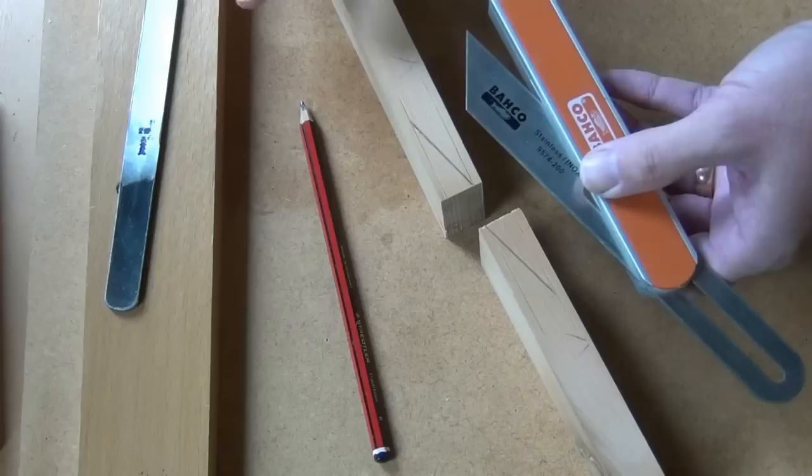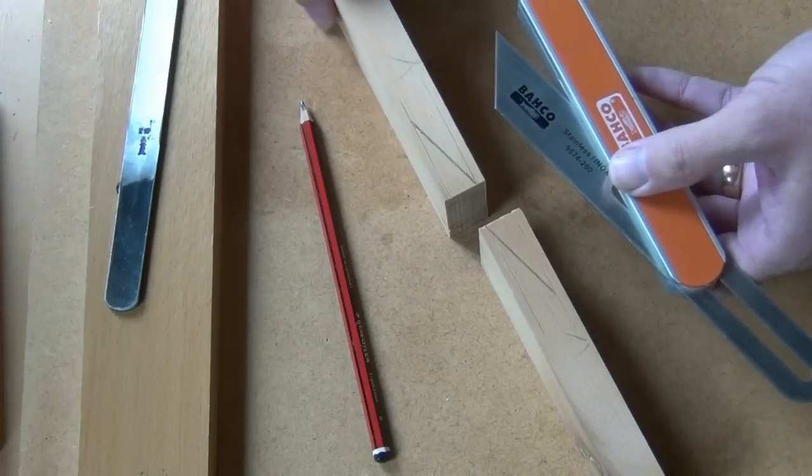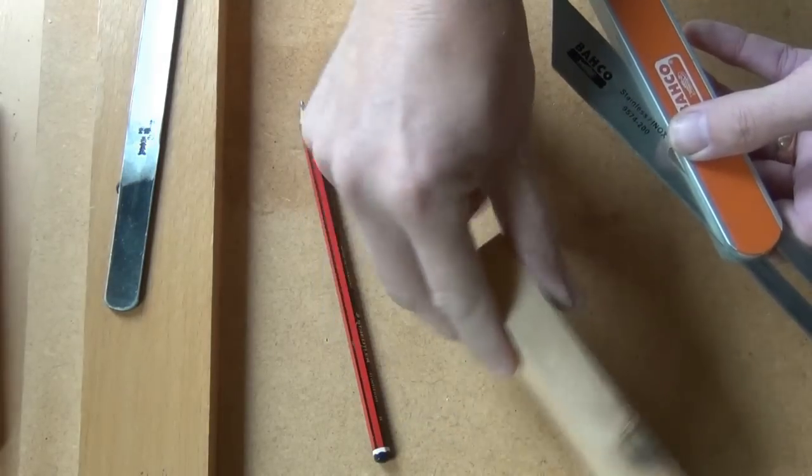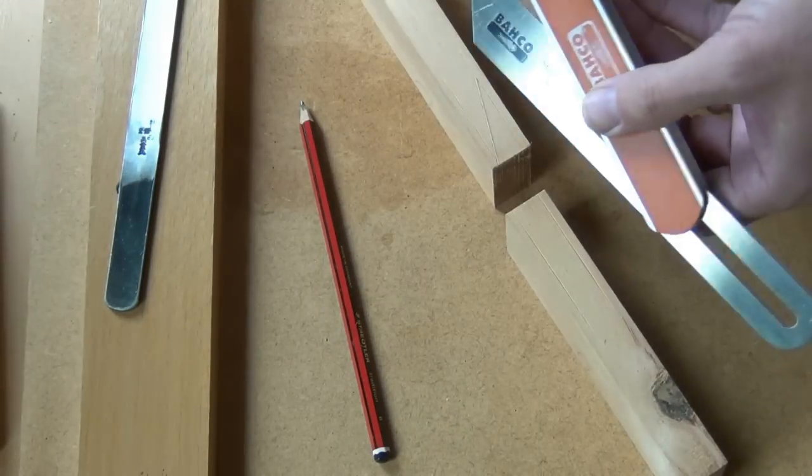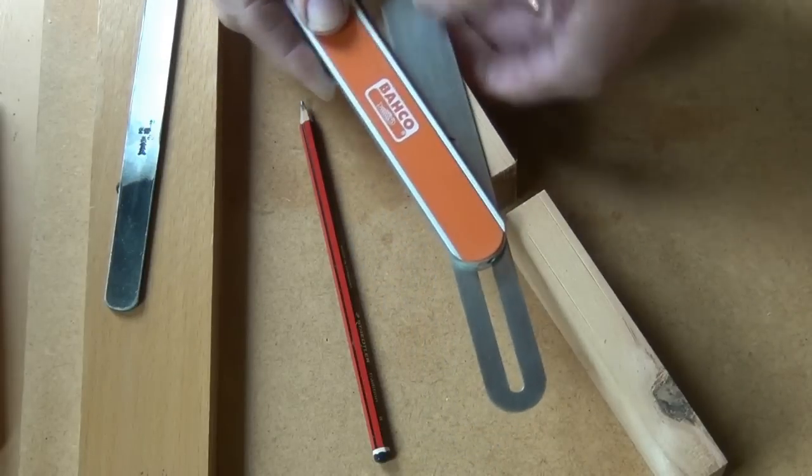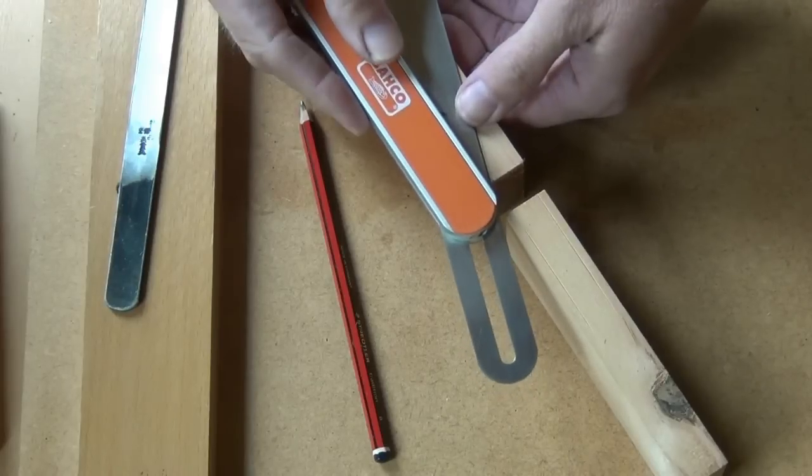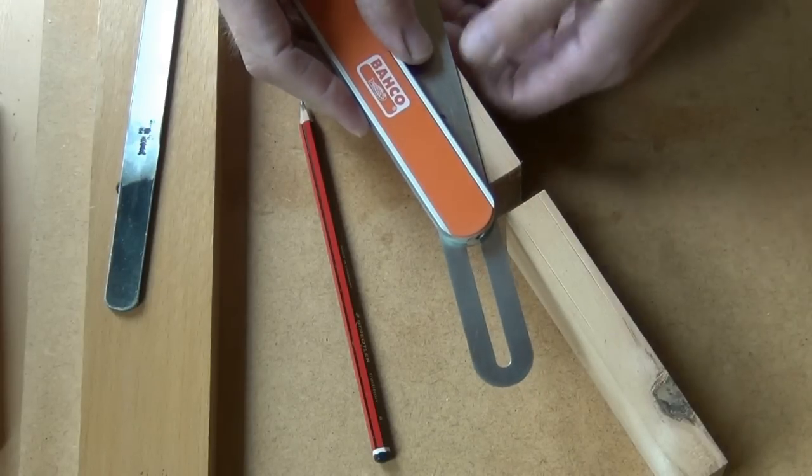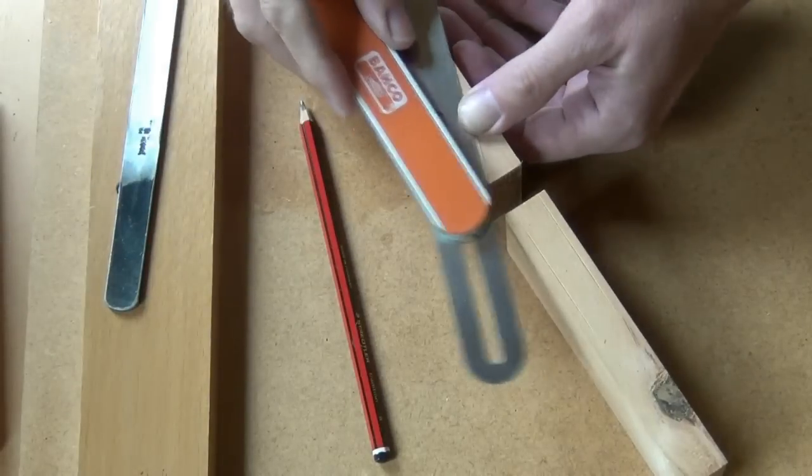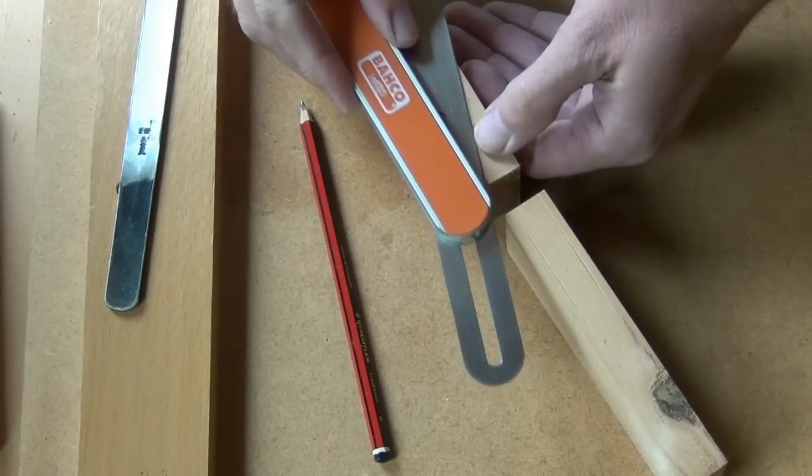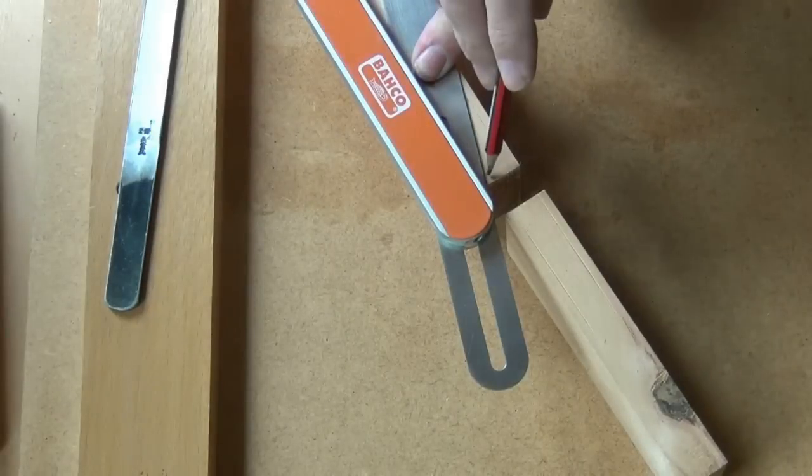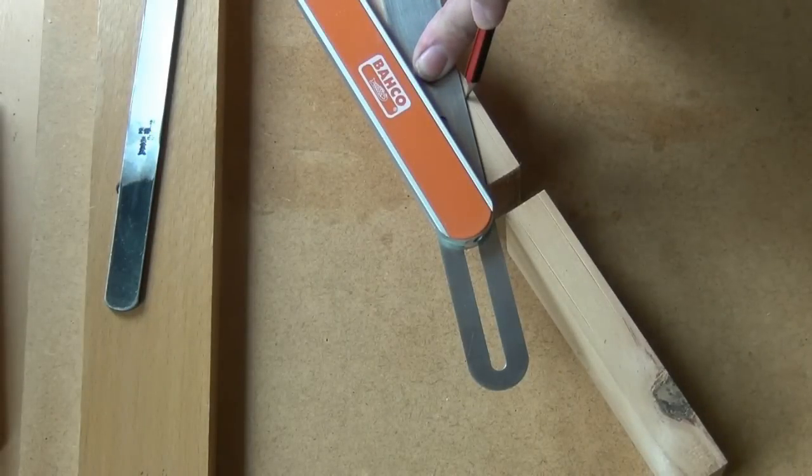Now flip everything over including the bevel gauge and then we want to connect from the step, again on the face side because the face side is this side now, so from the bottom step on that component, from the one step to the other step.